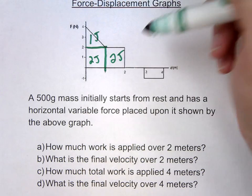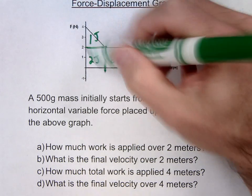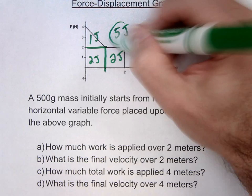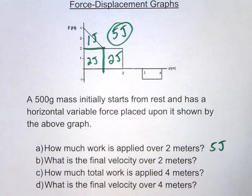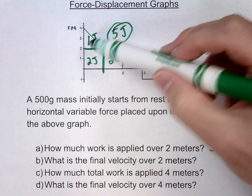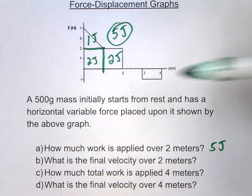So what I'm going to end up with is an overall work here of 5 joules total. So really there's not any complicated math here. You're just looking at the area underneath your curve here.